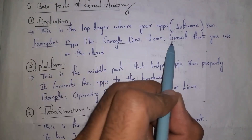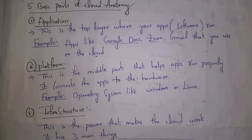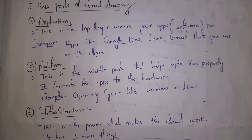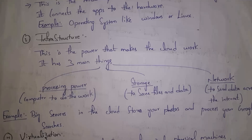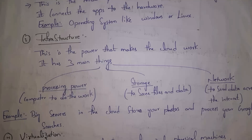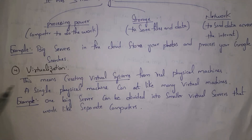The second part is platform. To run applications in the cloud, you first need to install an operating system — so platform is essentially the operating system in the cloud, such as Windows or Linux. After installing the operating system, you can run applications. This is the middle part that helps software run properly by connecting software to hardware. The third part is infrastructure, which contains three components: processing power, storage, and network — all essential for the cloud to work.